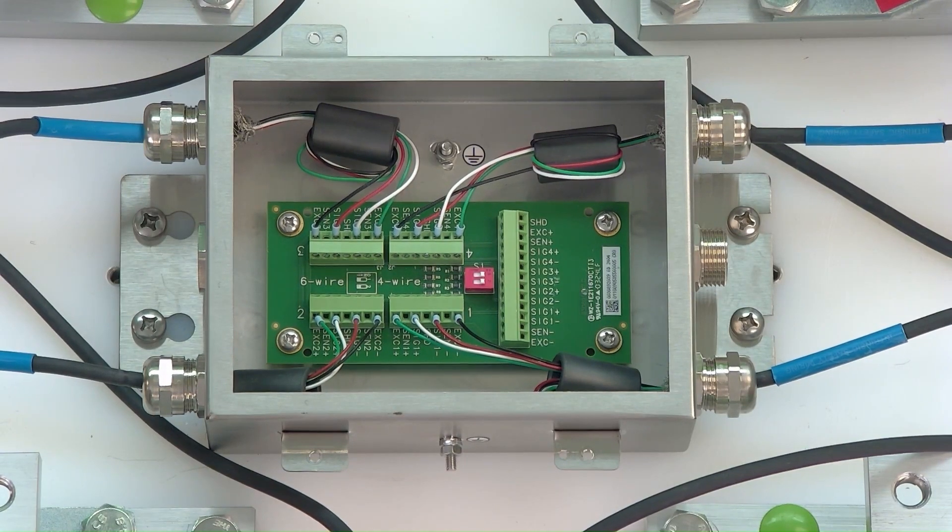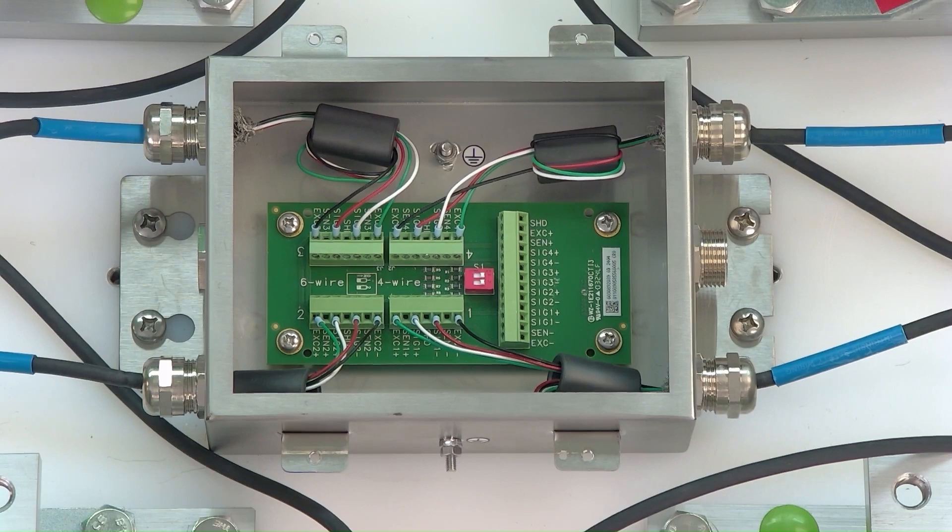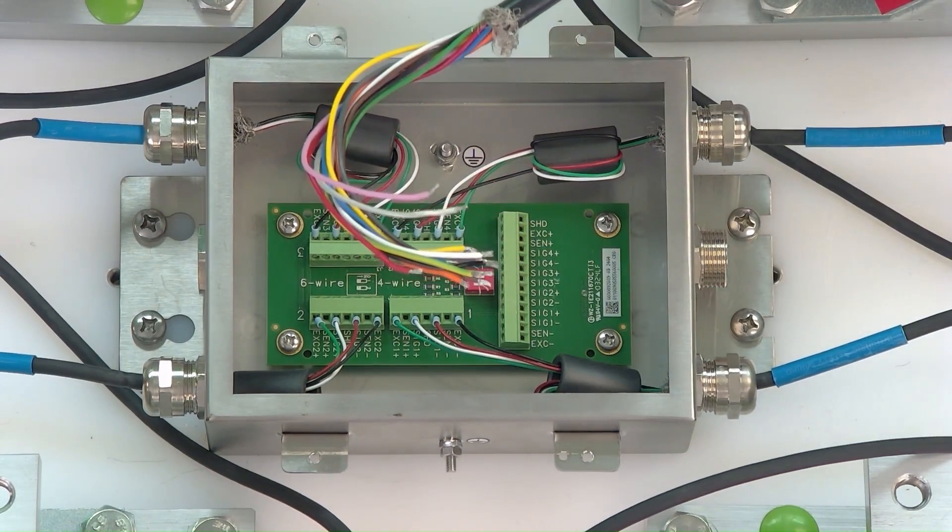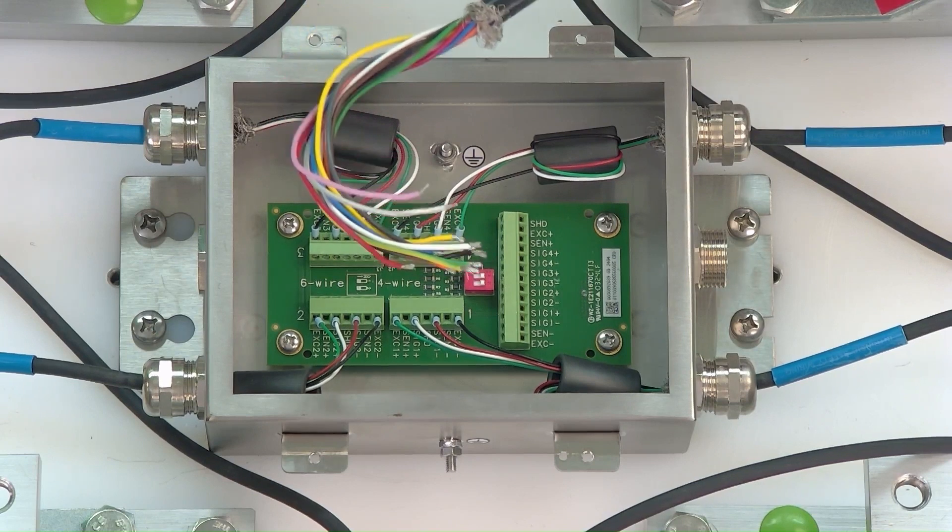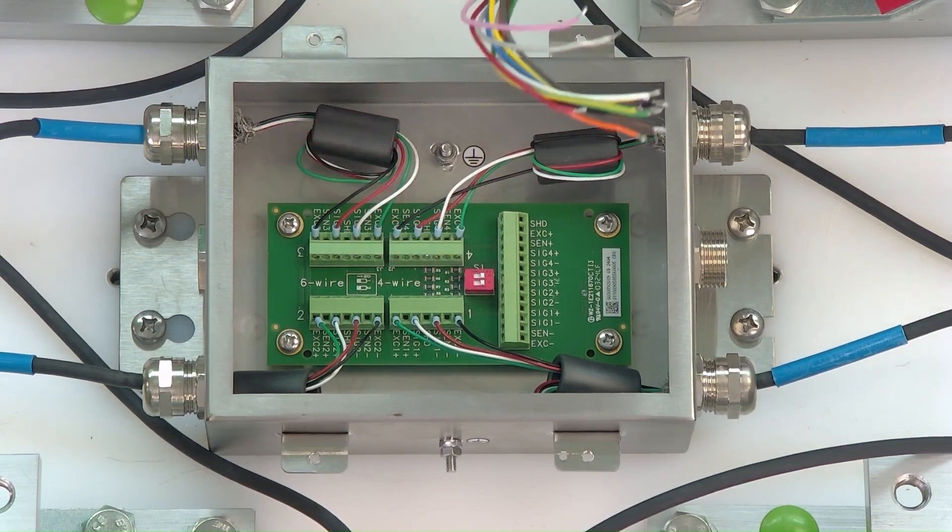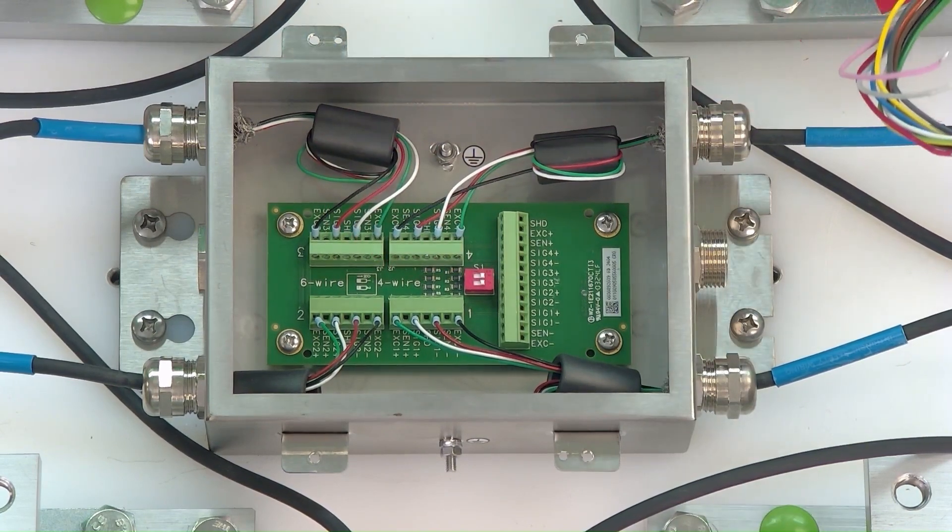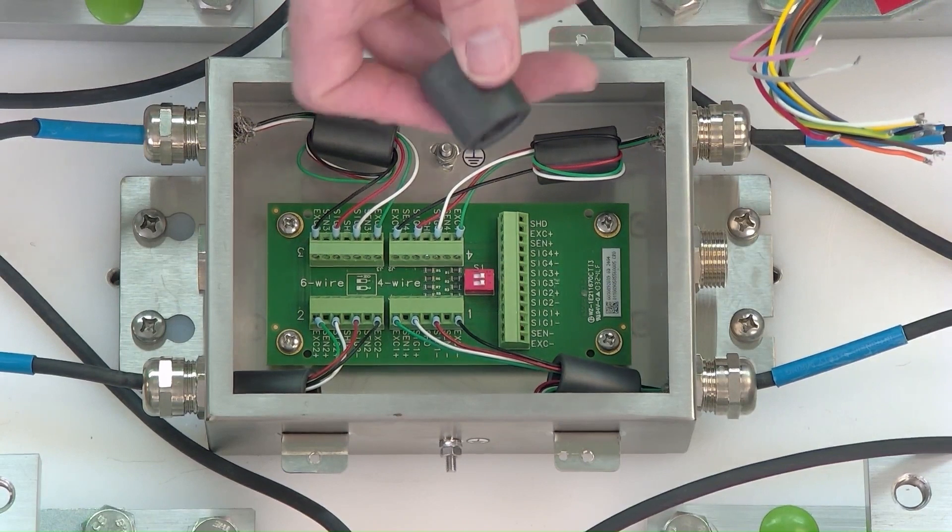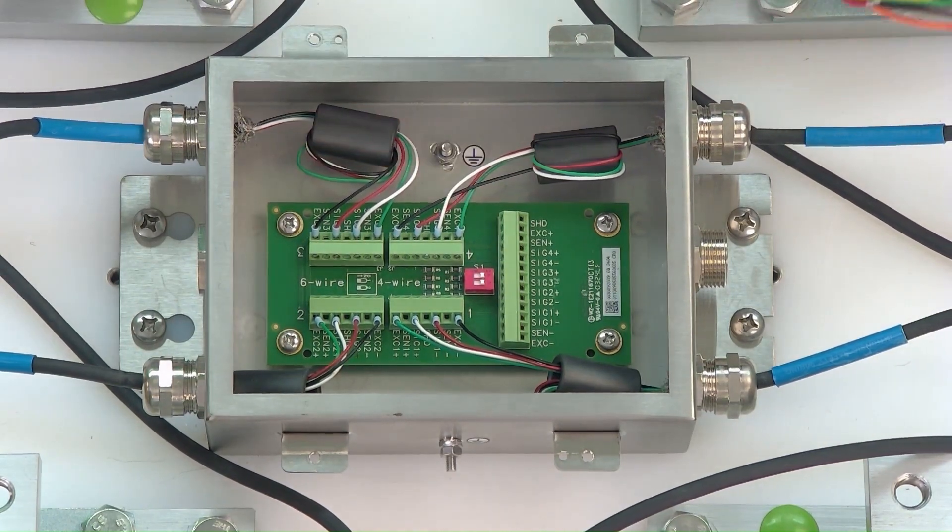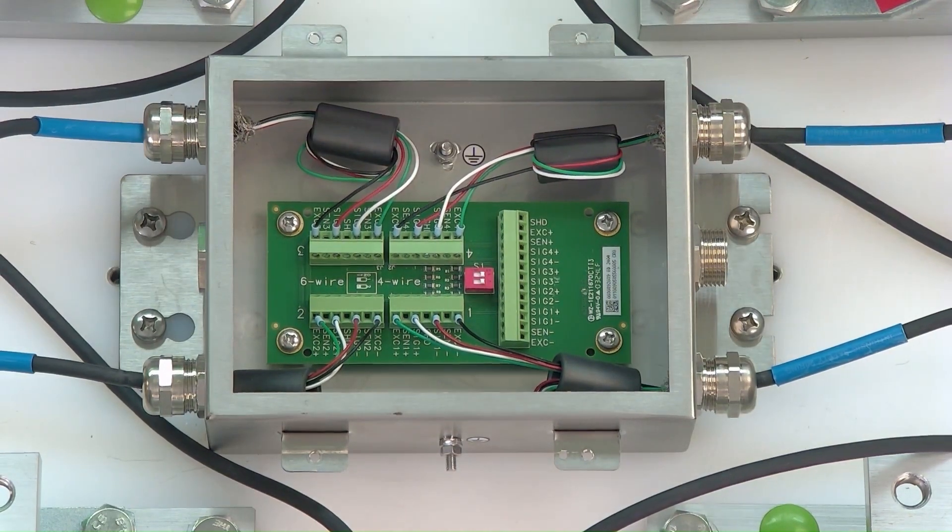To accommodate having four different load cell channels for IND 360, we need a bigger home run cable. Here is a 13-conductor wire. I'm going to pass that through this junction box and place this ferrite on it as well. We'll cut to seeing that finished.